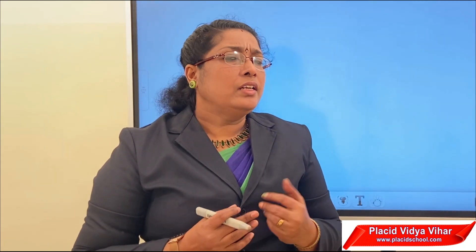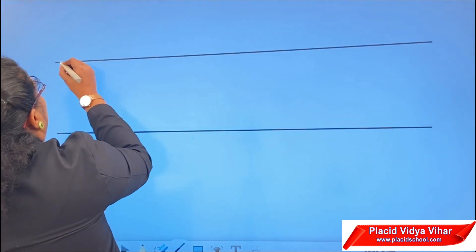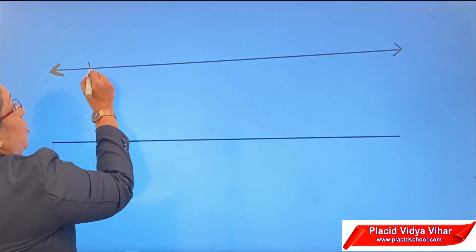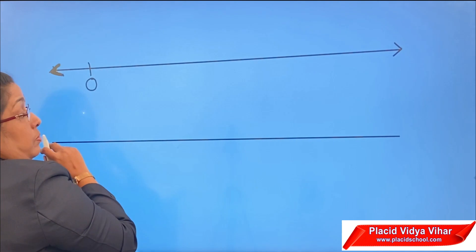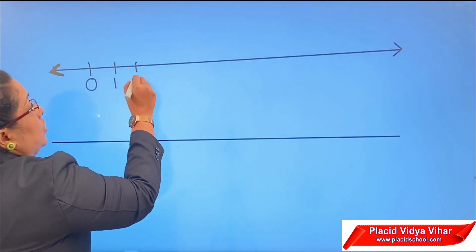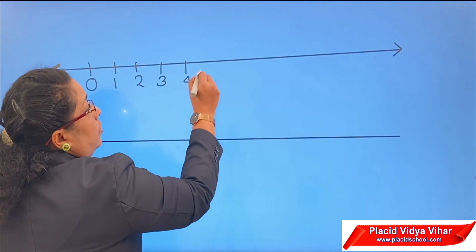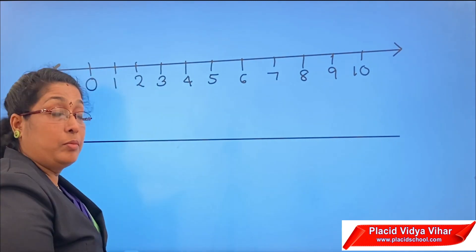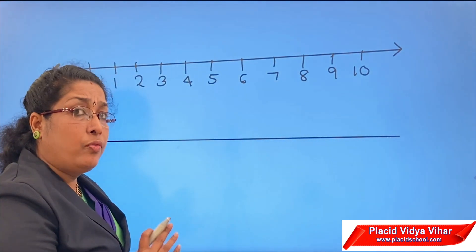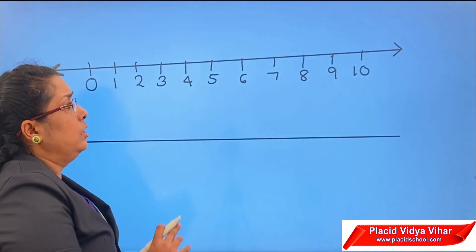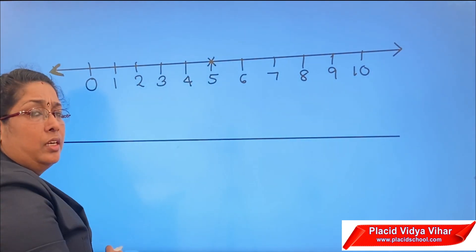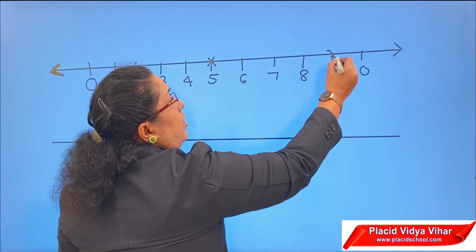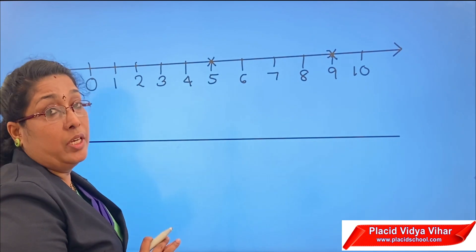Now we will move to the next topic: the number line. A number line is a line of numbers. We draw a line and mark points from 0 onwards: 1, 2, 3, 4, 5, 6, 7, 8, 9, 10, and so on. If you are asked to represent whole number 5 on the number line, you locate it at 5. If asked to mark whole number 9, here it is at 9. This is how we plot whole numbers on a number line.